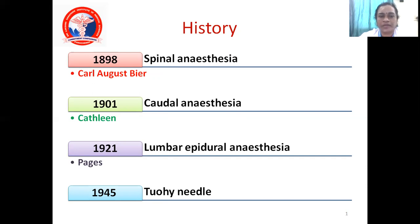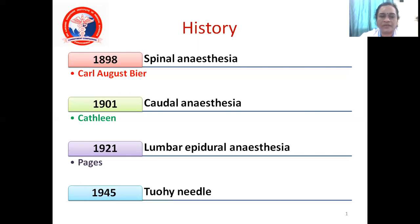Next is caudal anesthesia. Drugs are given in the caudal space, which is the lowest portion in the spinal region near the lumbar region. This was introduced in the year 1901 by Kathleen. Then you have lumbar epidural anesthesia. In spinal anesthesia, the drug is given in the subarachnoid space and mixes with CSF. Whereas in epidural anesthesia, the drug is given in the epidural space. Epidural anesthesia was first discovered in 1921 by Pages.